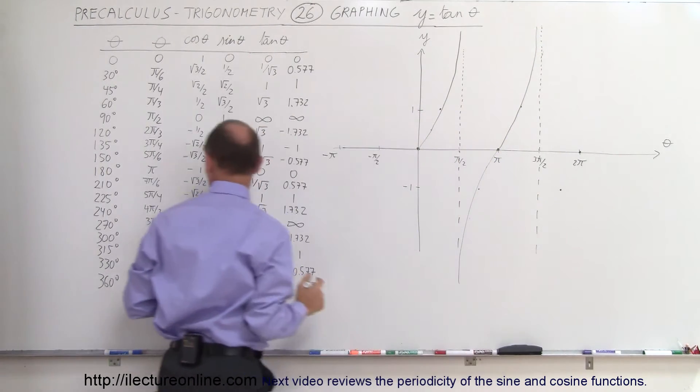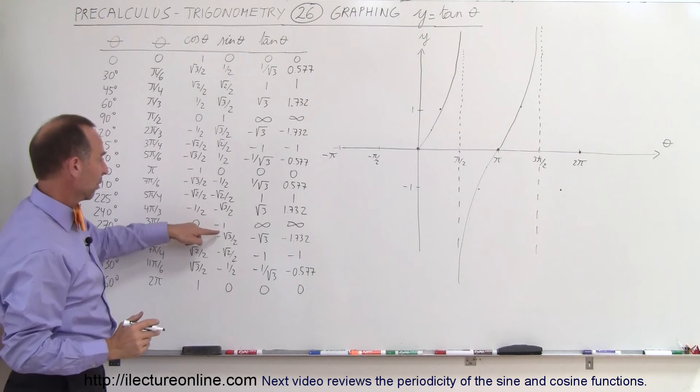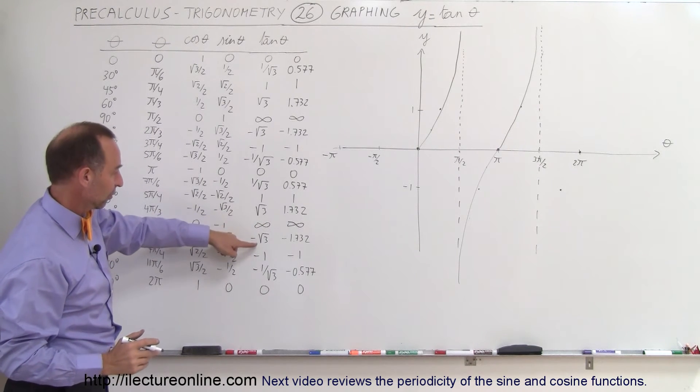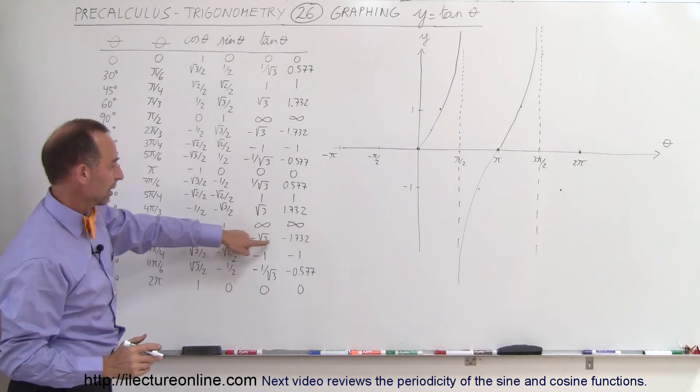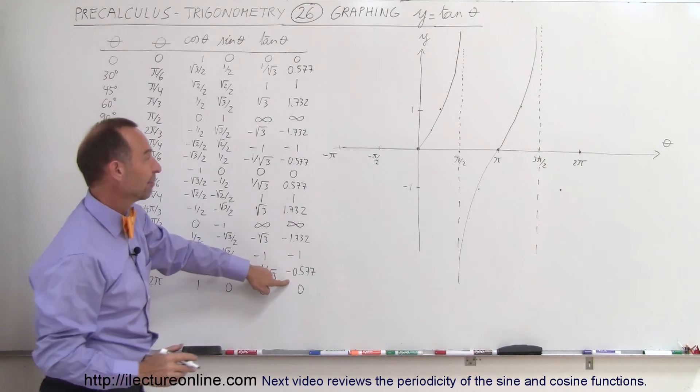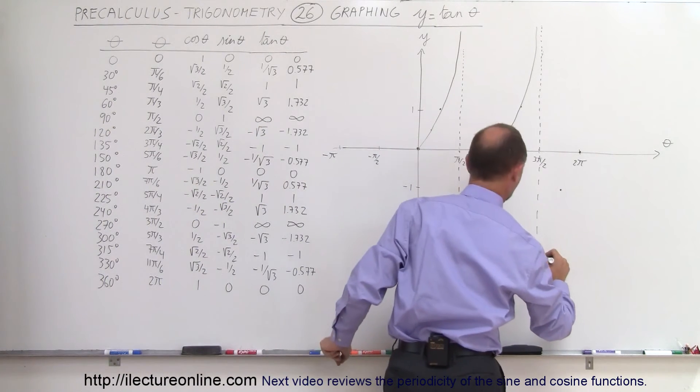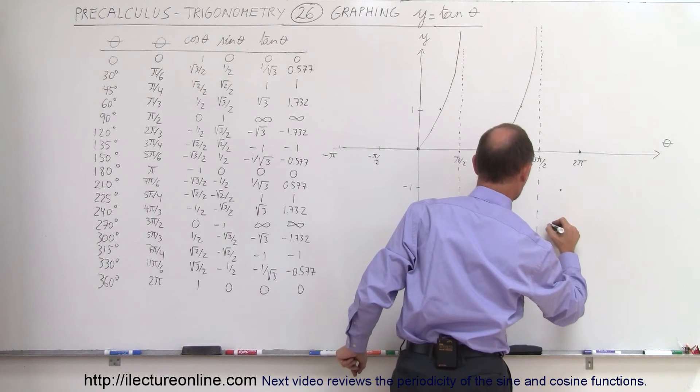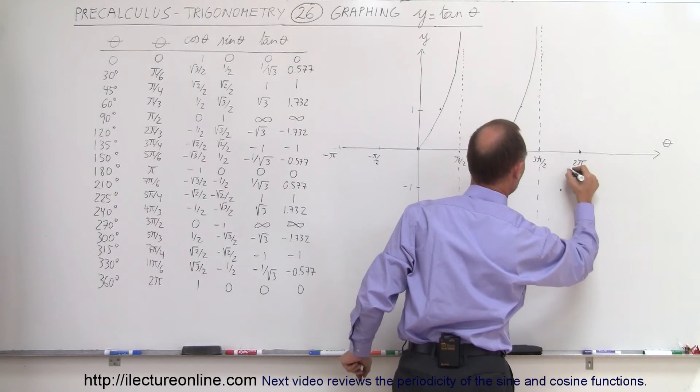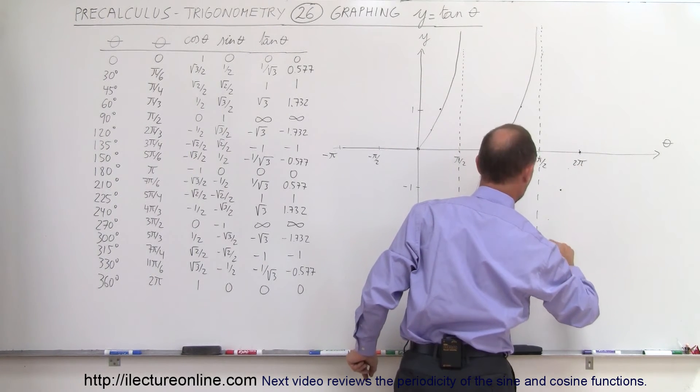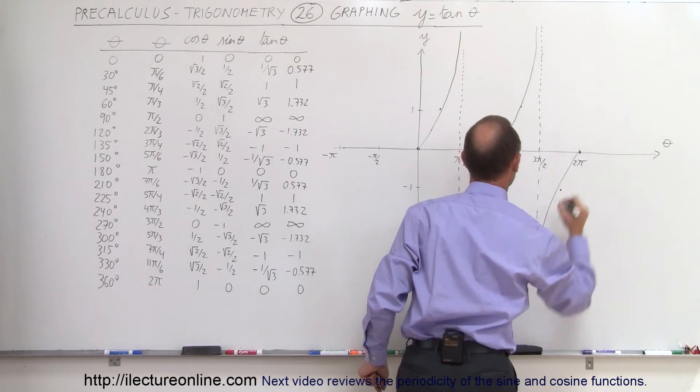And then past 3 pi over 2, past 270 degrees, we're back on negative values. Right here at negative square root of 3, that's negative 1.7, negative 1, negative 0.577. So that looks like we're back over here somewhere. So you can see that the value goes up like this.